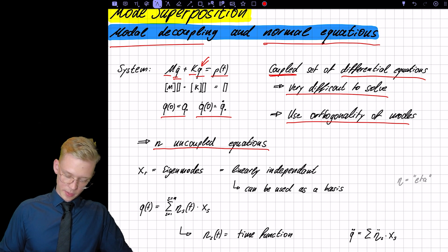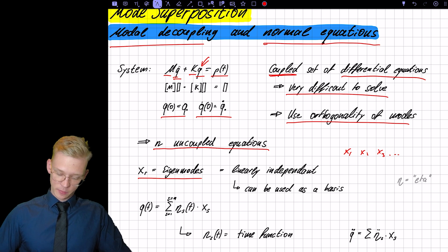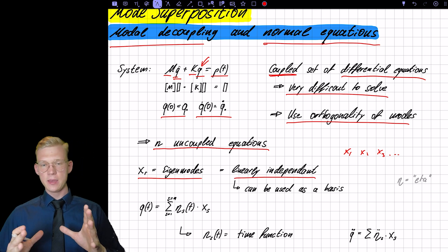So in the videos before we got our XR which are our eigenmodes. So we have X1, X2 and X3 and so forth. And those eigenmodes are linearly independent. That means that we cannot factor or we cannot multiply one to get another eigenmode.